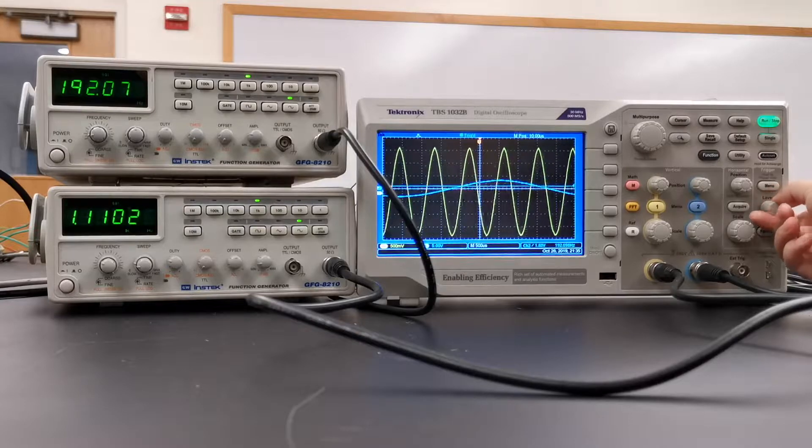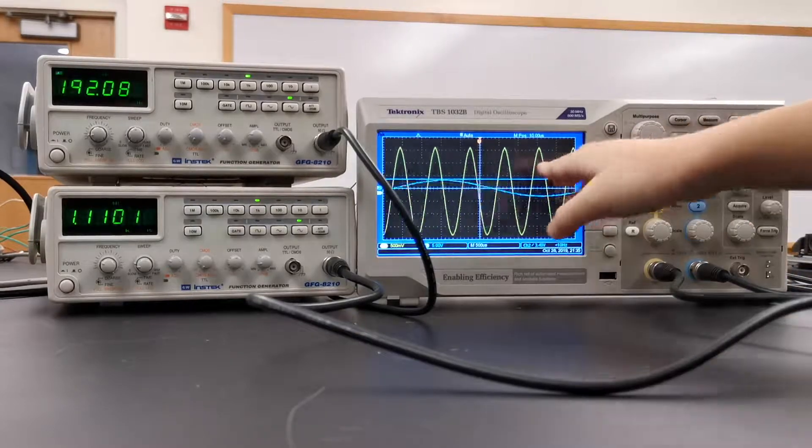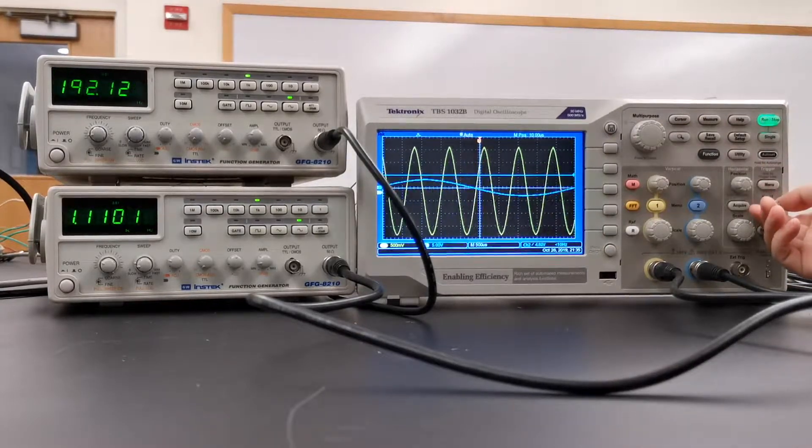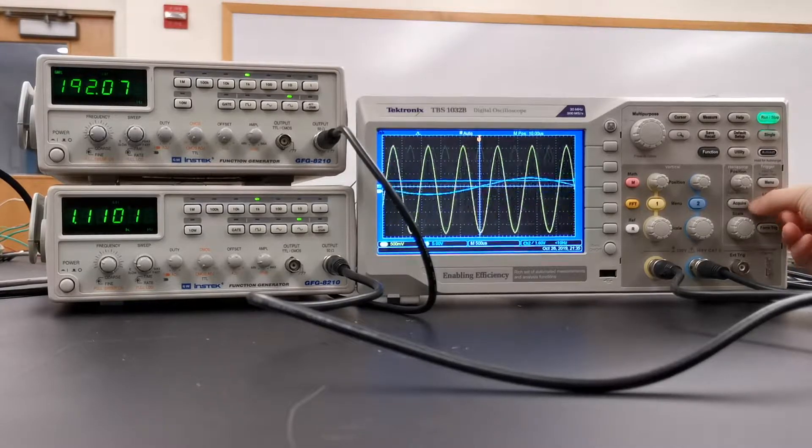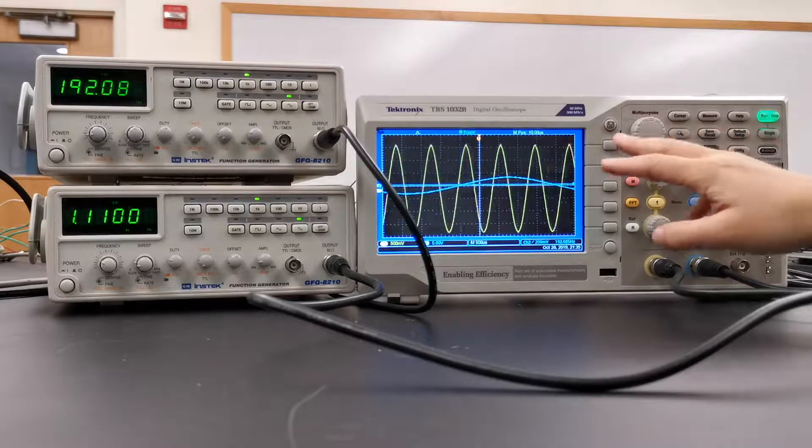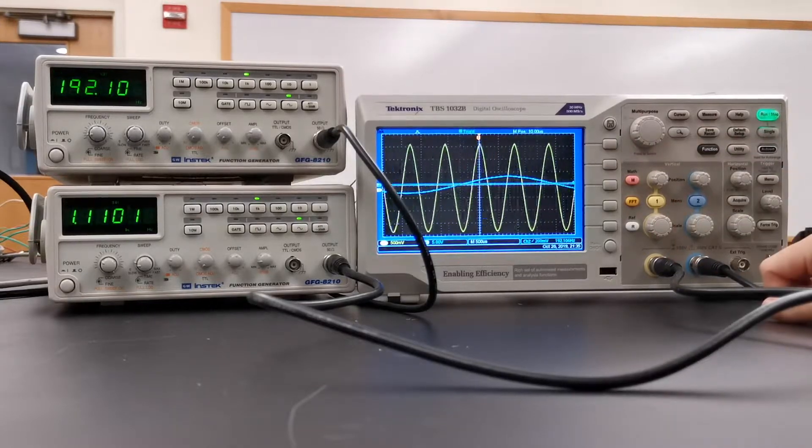And you can see if the trigger—this horizontal line—is not intersecting with channel two, it's not going to make any sense. So you put that into the wave and this stops channel two.